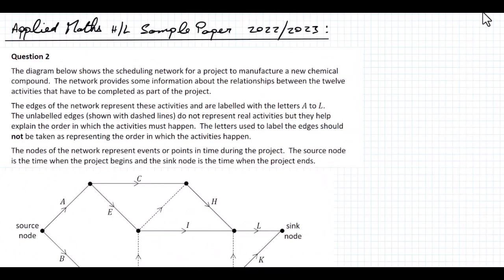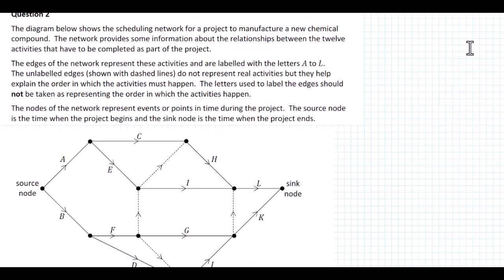This is the higher-level applied maths sample paper for 2022-2023, question 2. In this question we have a diagram showing the scheduling network for a project to manufacture a new chemical compound. The network provides some information about the relationship between the 12 activities that have to be completed as part of the project.